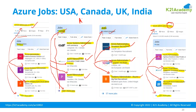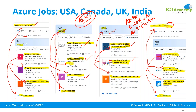That is basically your AZ-104 course. As we know, there are three different courses for Azure: there is AZ-900, which is the foundational course; AZ-104, which is the administrator course; and AZ-305, which is the architect course.